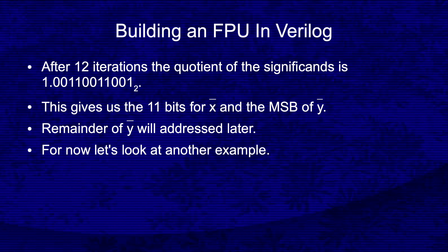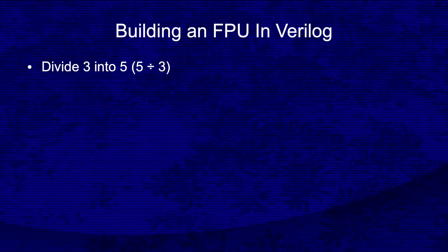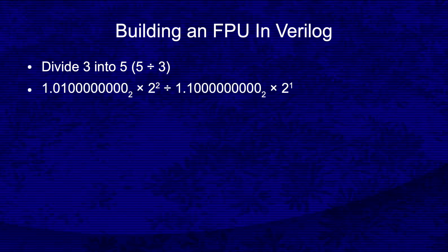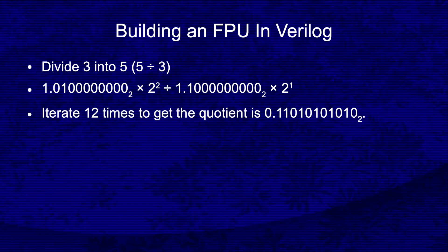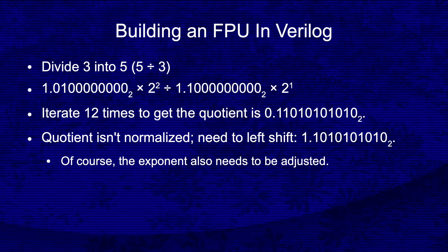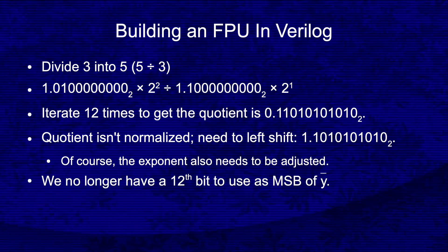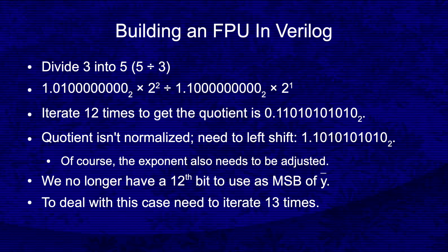Let's look at another example. What happens when we divide 3 into 5? Iterating 12 times, the significand quotient will be 0.11010101010. Note that this significand isn't normalized — instead of a single 1 digit to the left of the binary point, we now have a 0. To normalize, we need to shift the significand to the left and make a corresponding change to the exponent for the quotient. After normalizing, we no longer have a 12th digit to use as the most significant bit of y-bar. In order to calculate that bit, we need to iterate one more time. This extra iteration doesn't harm the previous example of dividing 5 into 3.